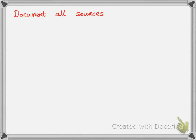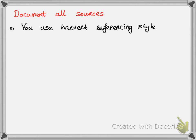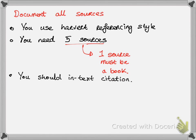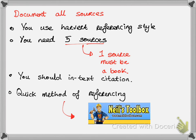The last thing to note is how to document all sources. In an e-assessment, you would not be asked to document sources. However, during summative and formative assessments, you will be asked to do so. For this, we use the Harvard referencing style. You need to show five sources, and one of these must be a book. You should include in-text citations within your assignment or essay. If you are uncertain how to do Harvard referencing correctly, there's a quick method called Neil's Toolbox, where you can insert the correct information about your source and it will generate your reference for you to copy and paste into your bibliography. Thank you.